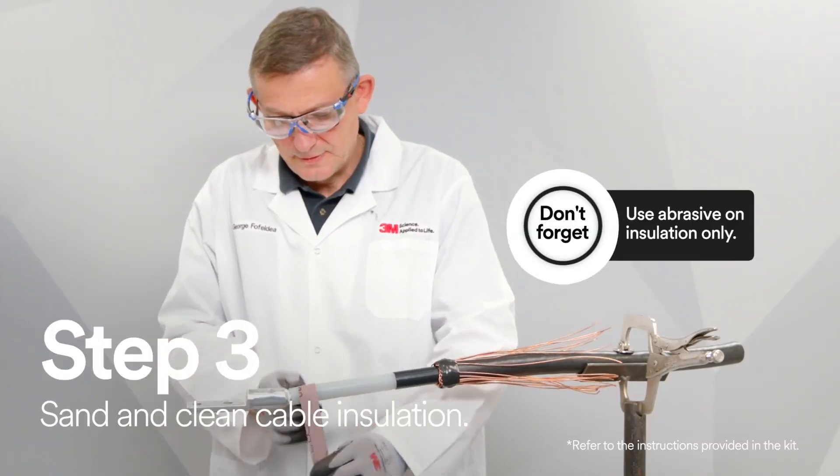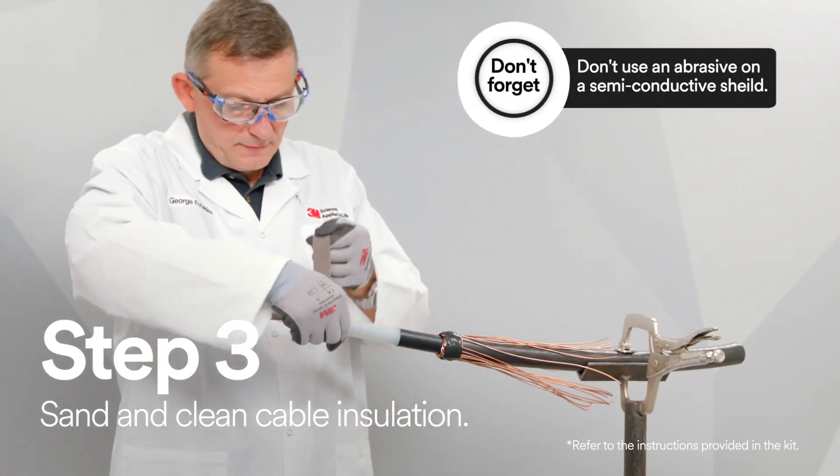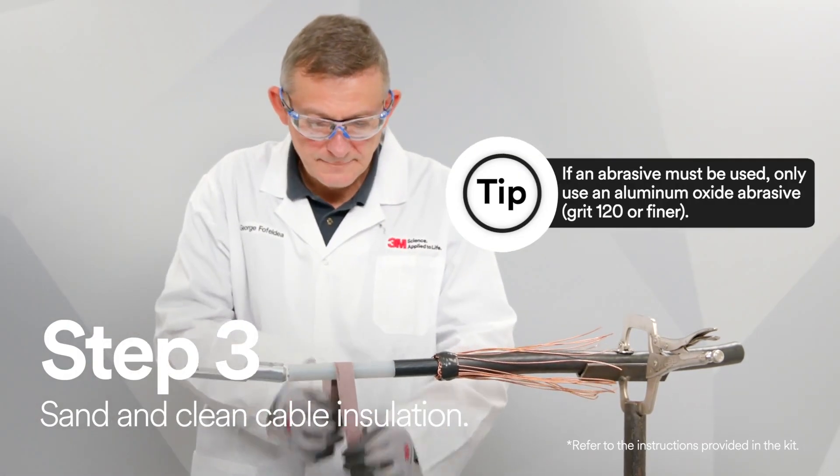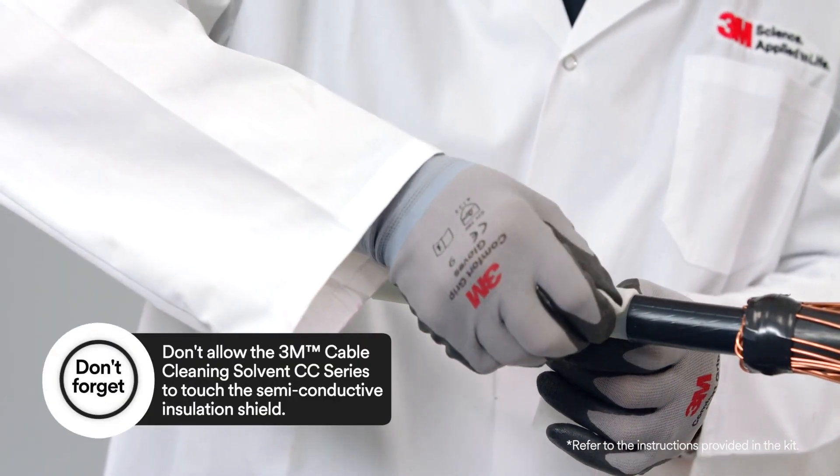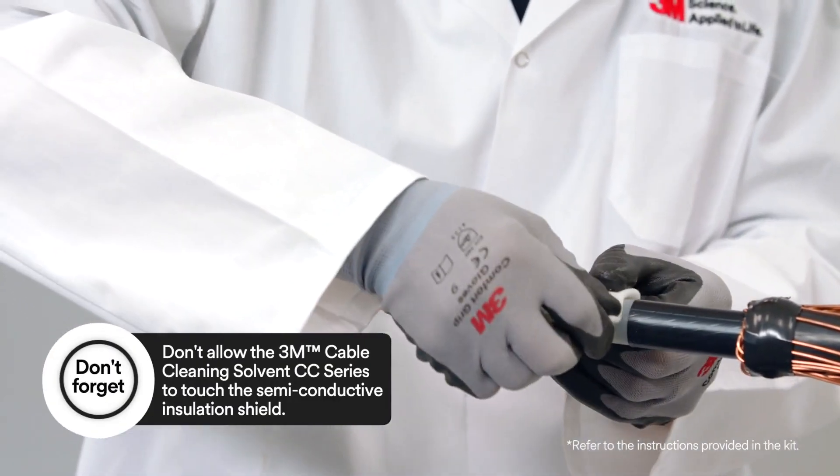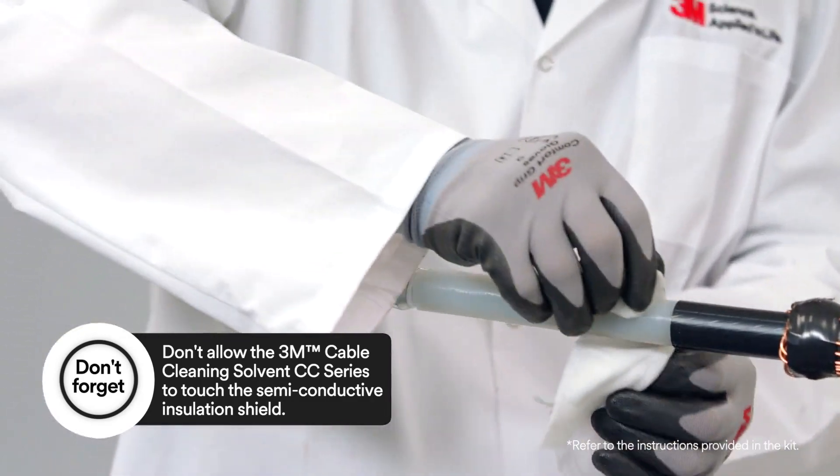After you've installed the lug, you must sand and clean the cable insulation using standard practice. Start by lightly sanding then wiping the cable insulation with 3M cable cleaning solvent CC series. Now you're ready to install the termination.